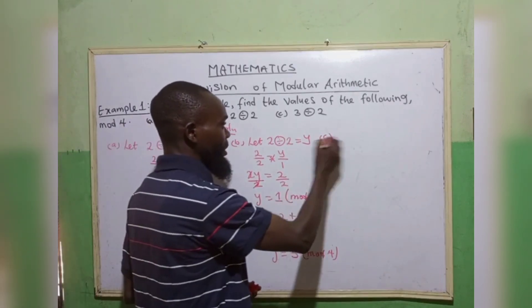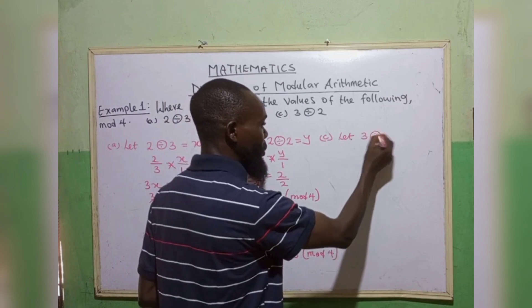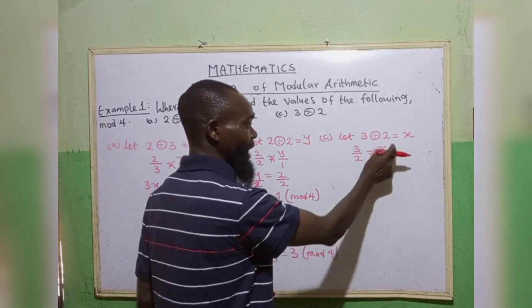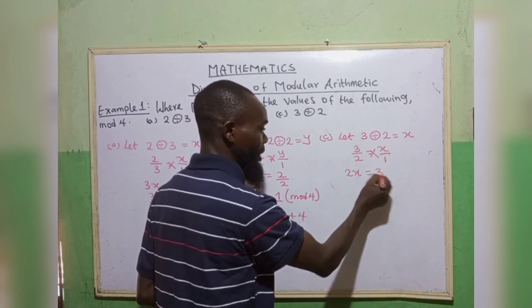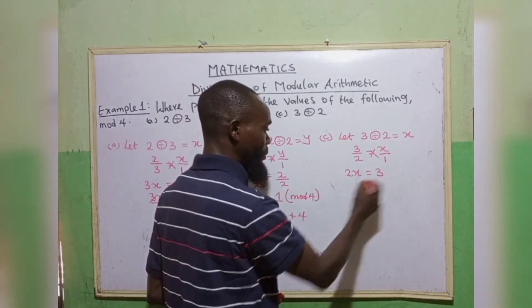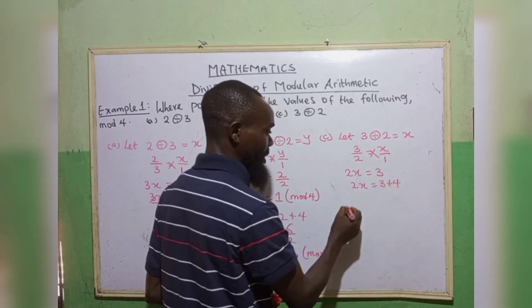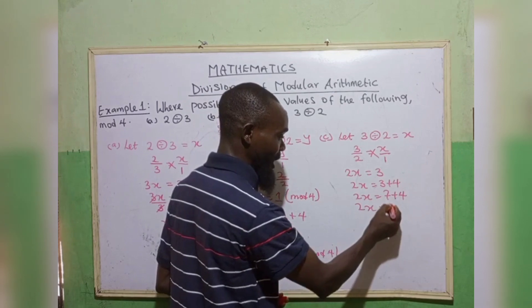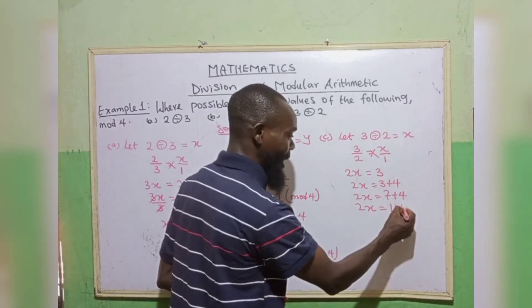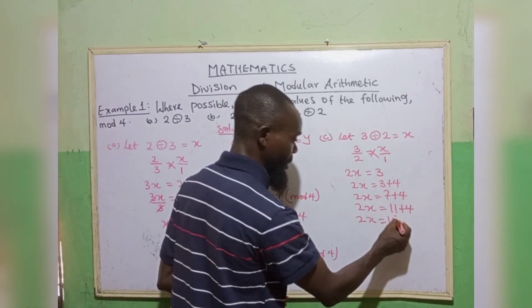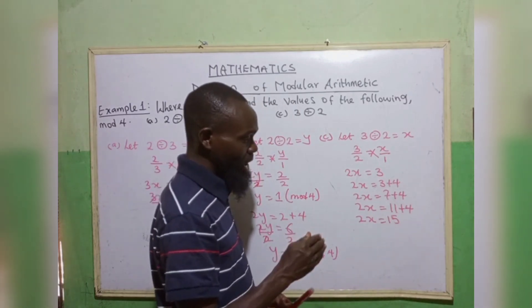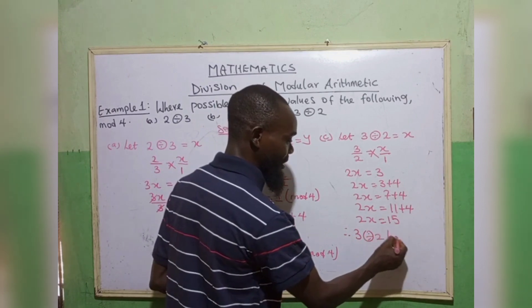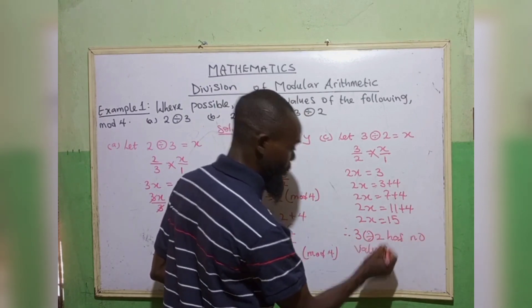Now c, 3 divided by 2 equals to x. So we have 3/2 = x/1. Cross multiply. 2x equals to 3. 2 cannot go in 3 without remainder. Let's add our modulo plus 4. 2x equals to 7. 2 cannot go in 7 without remainder. We add our 4 as well. 2x is equal to 11. When you look at it, if you continue to add your 4, 2 will not be able to go in that. Definitely, we see 3 divided by 2 has no values.